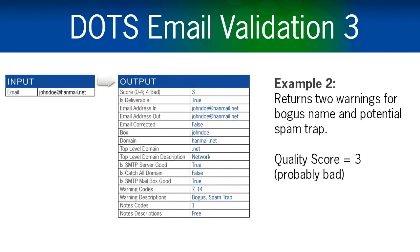In this second example, however, the email address isn't quite as strong. DOTS email validation has returned two warnings for a bogus name and potential spam trap. This email address has been assigned a quality score of 3, which means that it is most likely a bad address and one that should probably be removed from your record.